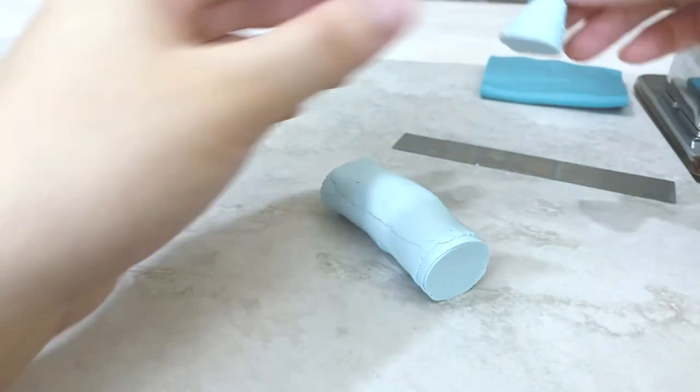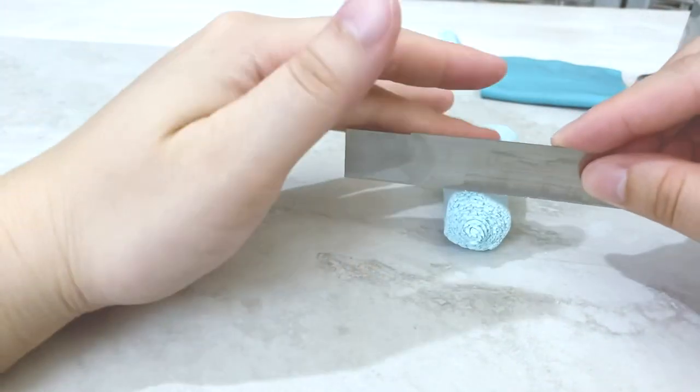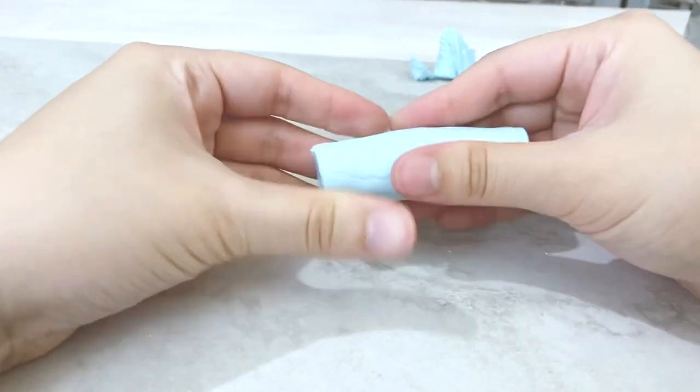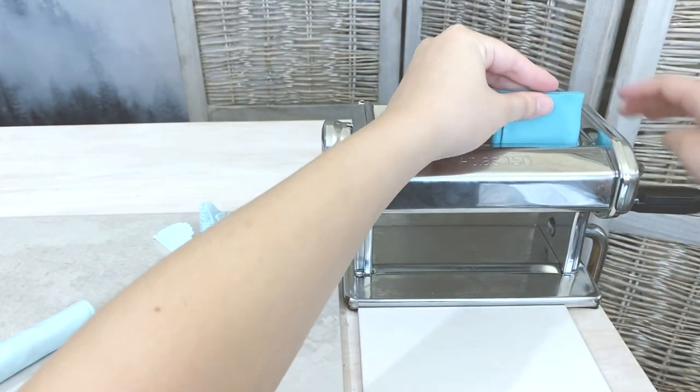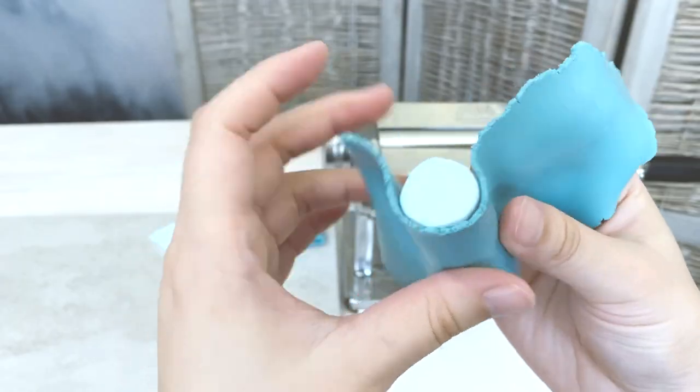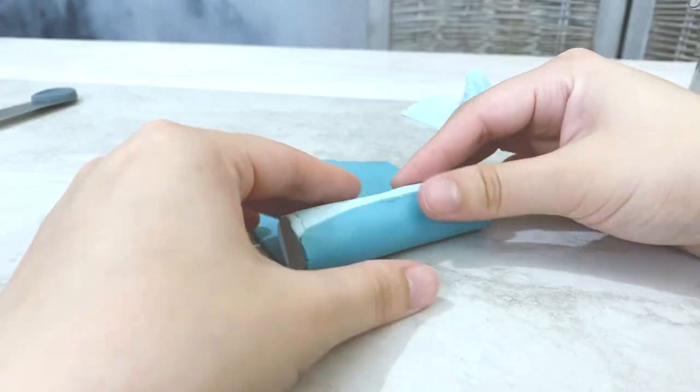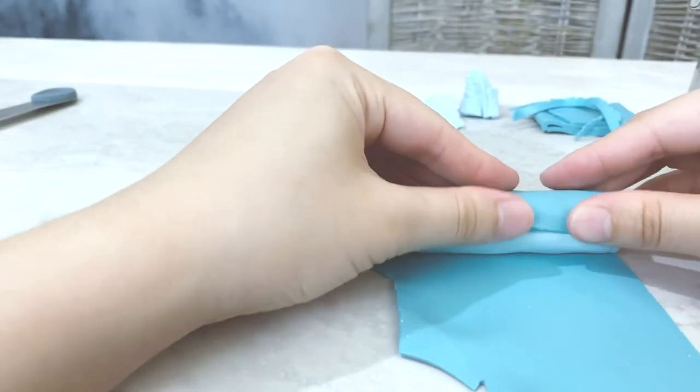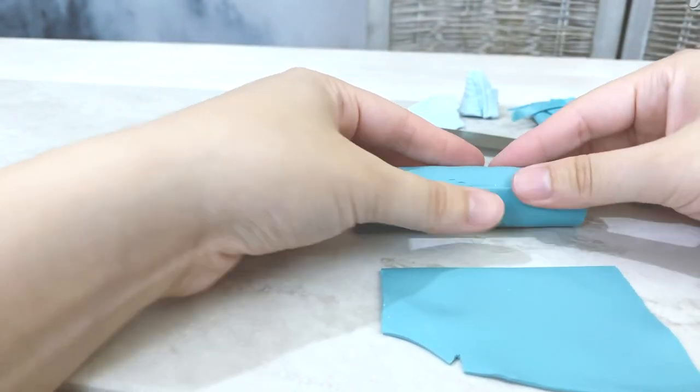After you've created your bullseye cane, you want to cut off the excess clay and set that aside. Then take your darker clay and add a border. I recommend a setting of 2. I believe I used 3 and I felt like it got a little thin during the reduction process.